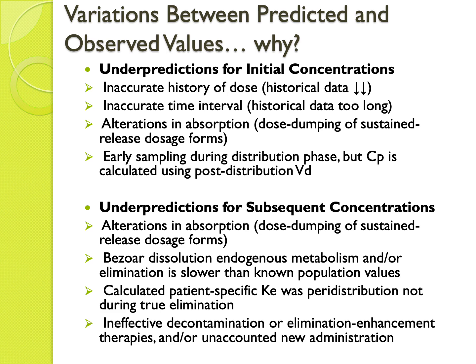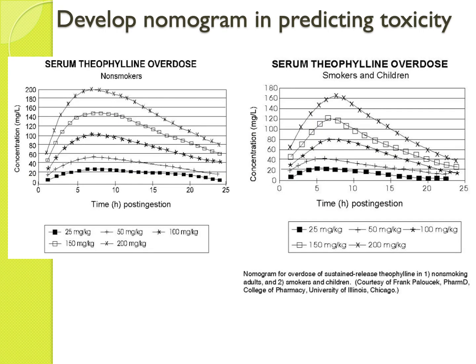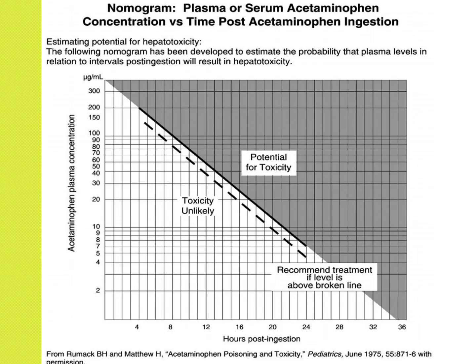Nomograms are a useful tool. For example, theophylline — commonly used for asthma and COPD — shows different concentration profiles between non-smokers and smokers. Non-smokers can have much higher concentrations, while smokers have increased metabolism and lower concentrations. For acetaminophen (paracetamol), you can use a nomogram to predict whether toxicity is likely: if the concentration is above the line, you give the antidote; if below, you can just hydrate the patient and allow self-healing.